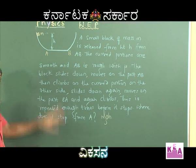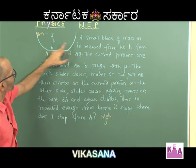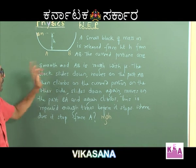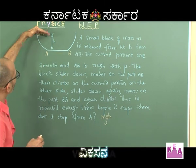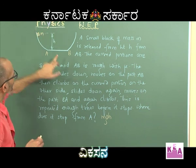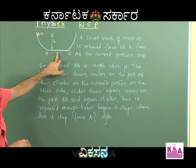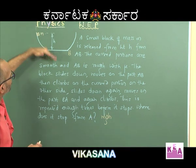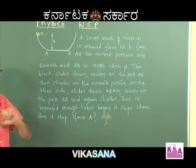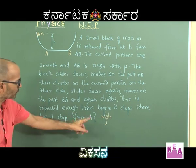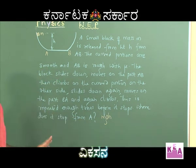The particle finally cannot come to rest anywhere on the curved portions because they are smooth — so it has to come to rest on the flat portion AB itself. It was originally at height H from AB and finally is lying on AB. The vertical displacement is H. Therefore MGH is the work done by the gravitational force, and that is positive.